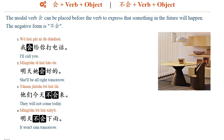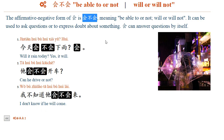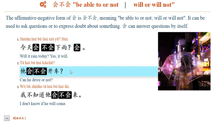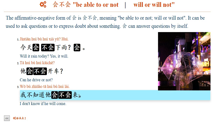明天不会下雨。 The affirmative-negative form of 会 is 会不会, meaning 'be able to or not' or 'will or will not.' It can be used to ask questions or to express doubt about something. For example: 今天会不会下雨? 会。 他会不会开车? 我不知道他会不会来。